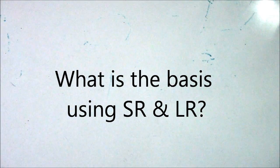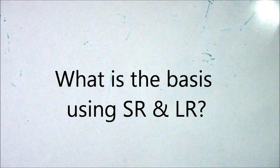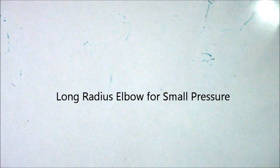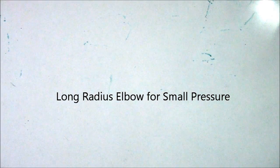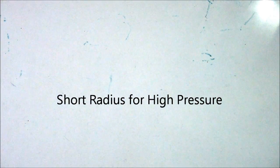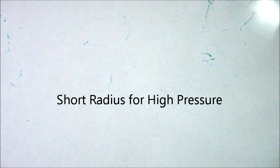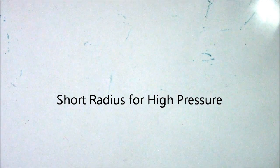Next, we have two types of elbows: SR (short radius) and LR (long radius). Long radius elbows are used for small pressure drops, while short radius elbows are used for high pressure drops.